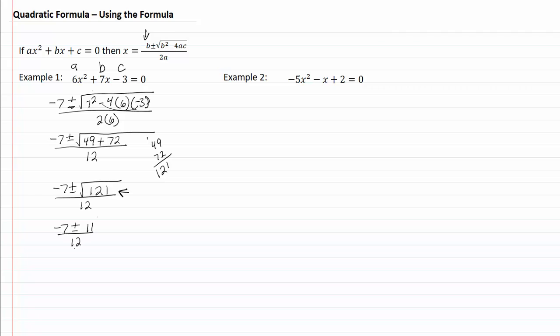I'm going to rewrite this so I have negative seven plus eleven over twelve, and negative seven minus eleven over twelve. Negative seven plus eleven is going to give me four twelfths, and negative seven minus eleven will give me negative eighteen twelfths.